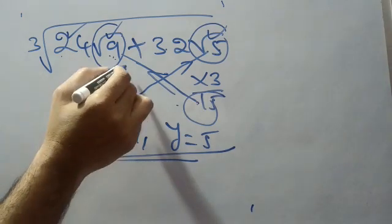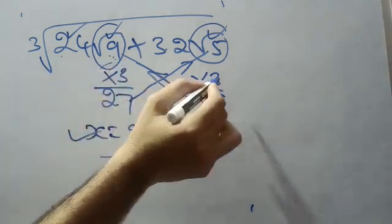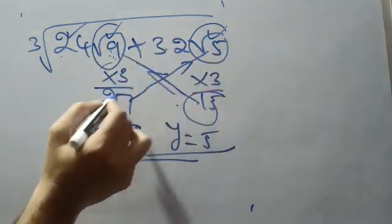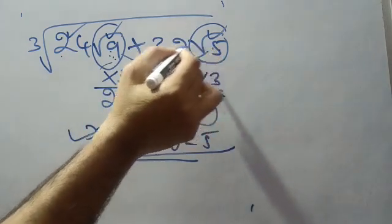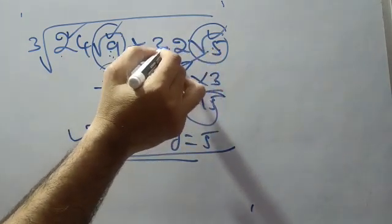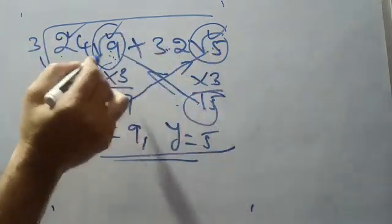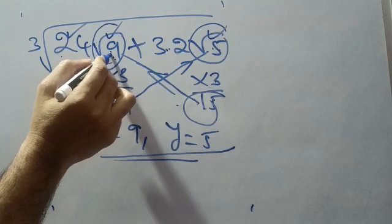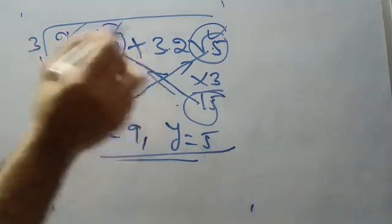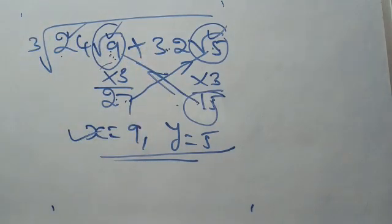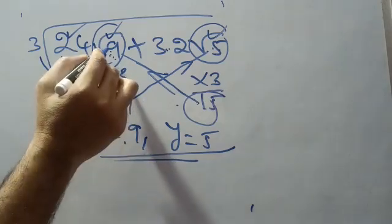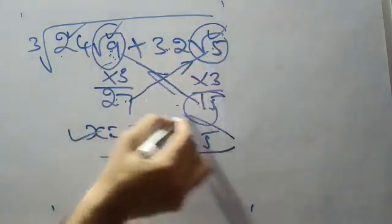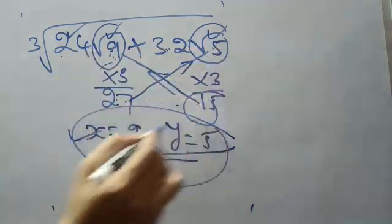So the first step is to multiply by 3 for the root values and check the condition: this value plus the root value sum should equal the coefficient here, and this value plus the root value sum should equal the other coefficient. We got that condition satisfied. Then the values are x = 9 and y = 5. Thank you.